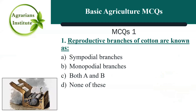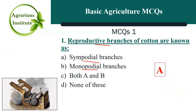First MCQ: Reproductive branches of cotton are known as — the correct answer is A, Sympodial branches. Sympodial branches are known as reproductive branches of cotton, while Monopodial branches are known as vegetative branches of cotton.